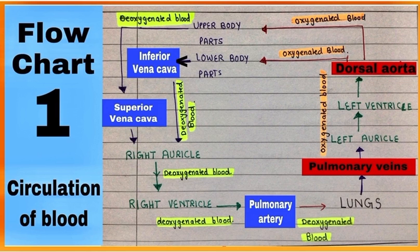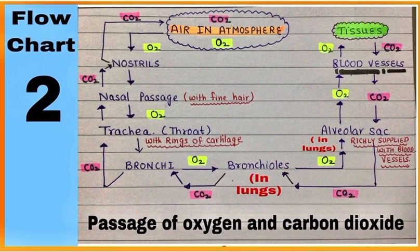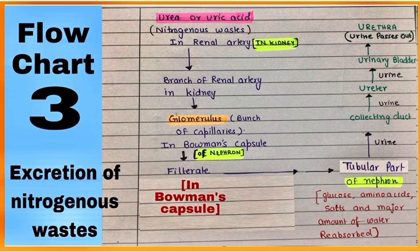Flowchart number two is showing the passage of oxygen from the atmosphere to the lungs, and from the lungs to the tissues, and then the passage of carbon dioxide from the tissues to the lungs and from the lungs to the atmosphere.